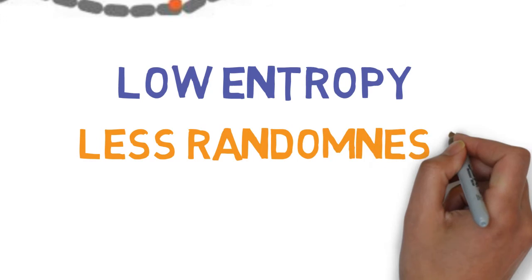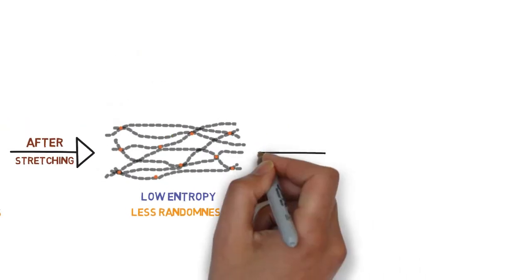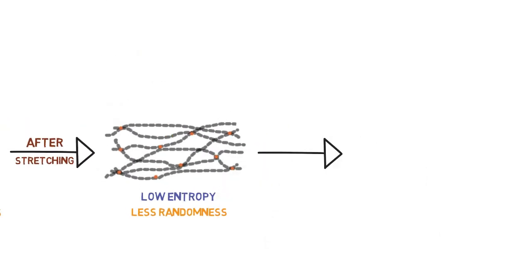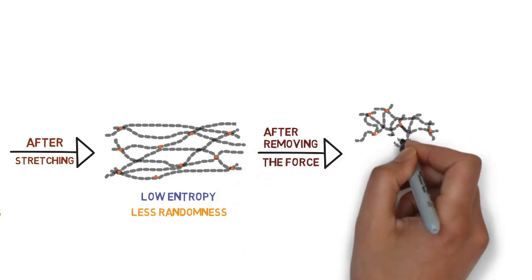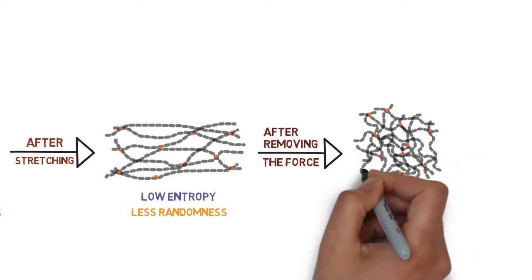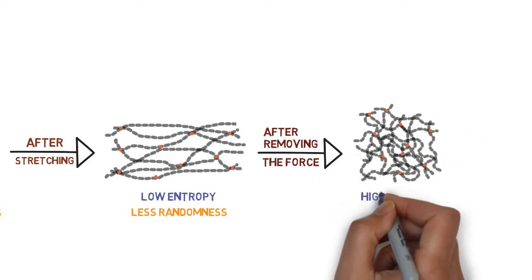As soon as one lets go of the stretched rubber, these chains are going to try to become disordered again because of the second law of thermodynamics. This means they return to their original tangled mess. This makes the piece of rubber snap back to its original size and shape.